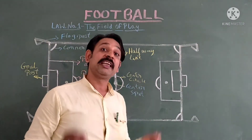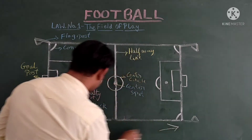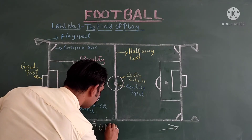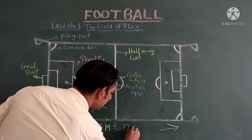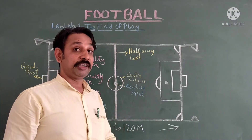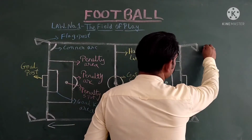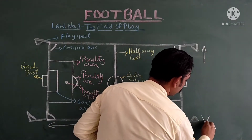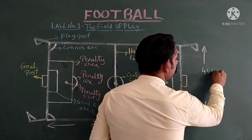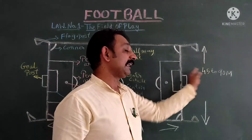Now let us know the measurements of the ground. The length of the football field — from one end to the other — is 90 to 120 meters. And the width of the field is 45 to 90 meters.